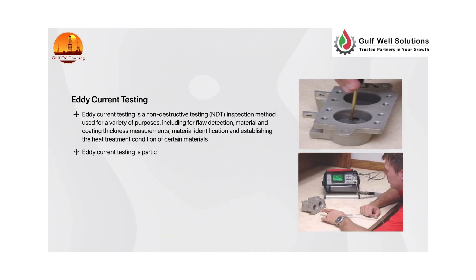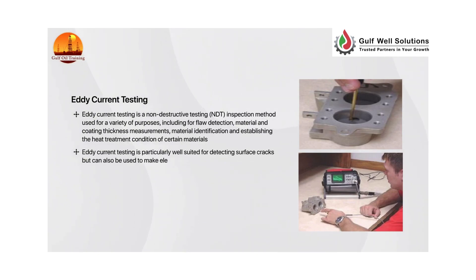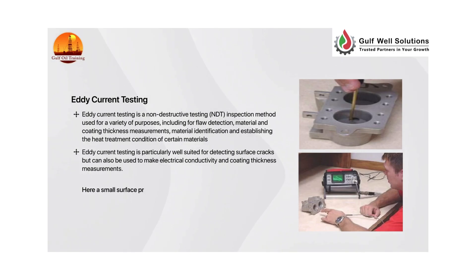Eddy current testing is particularly well suited for detecting surface cracks but can also be used to make electrical conductivity and coating thickness measurements. A small surface probe is scanned over the part surface in an attempt to detect a crack.